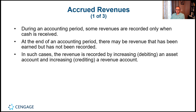Accrued revenue is revenue that we earned but didn't receive the cash for yet. During an accounting period, some revenues are recorded only when cash is received. At the end of an accounting period, there may be revenue that has been earned but not recorded — this is where we need an adjusting entry. We record the revenue by debiting an asset and crediting a revenue account.